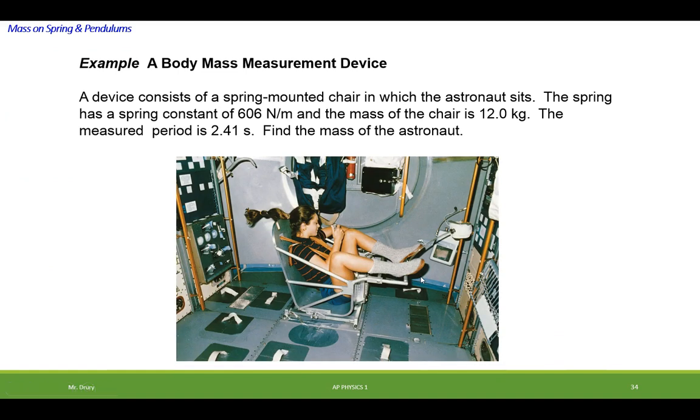This is how astronauts have to weigh themselves, excuse me, mass themselves in space. If they tried to stand on a scale, they'd just float off it. As a matter of fact, look at all these little handy holes and footholds throughout the space station to have them hold on. So they couldn't just stand on a scale, they'd float off. As a matter of fact, look at her hair floating around. So they use this spring chair to figure out what their mass is. It's a pretty interesting idea.